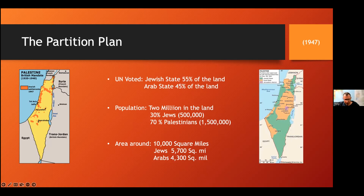In 1947, the United Nations accepted the resolution to divide Palestine into a Jewish state and a Palestinian state — and to do so they came up with the map you see here. The United Nations resolution had three parts: one, to divide the land between the two peoples according to the concentration of population with free-passage corridors between the two states; two, Jerusalem and Bethlehem were to become an international zone under United Nations control since the cities were important for everybody; and three, the British were to go home.